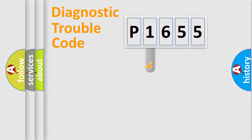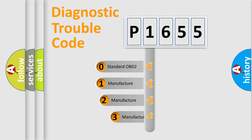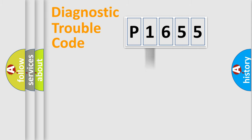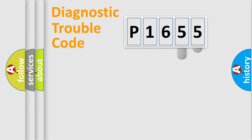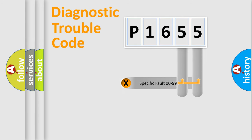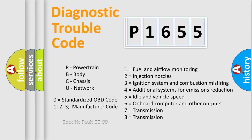This distribution is defined in the first character of the code. If the second character is zero, it is a standardized error. In the case of numbers 1, 2, or 3, it is a manufacturer-specific error expression. The third character specifies a subset of errors. The distribution shown is valid only for the standardized DTC code, and only the last two characters define the specific fault of the group. This division is valid only when the second character is zero.